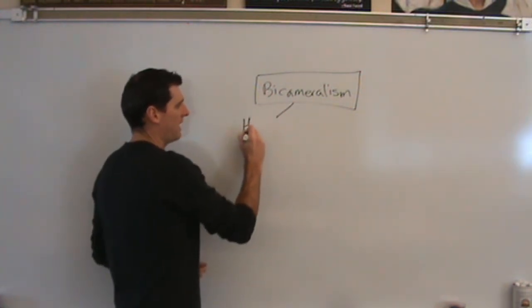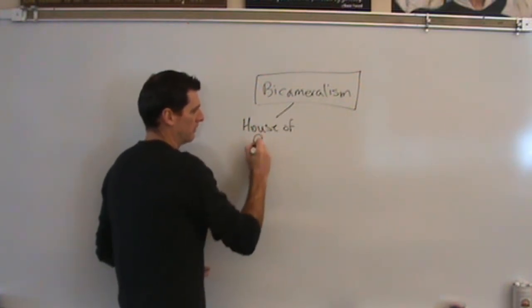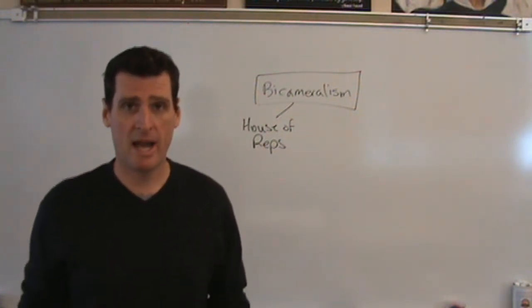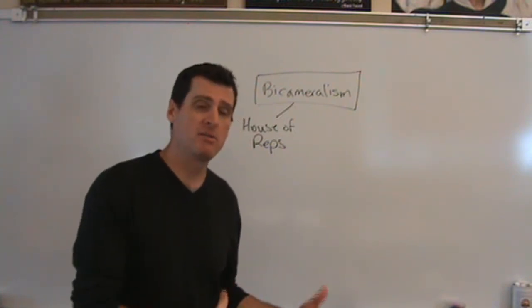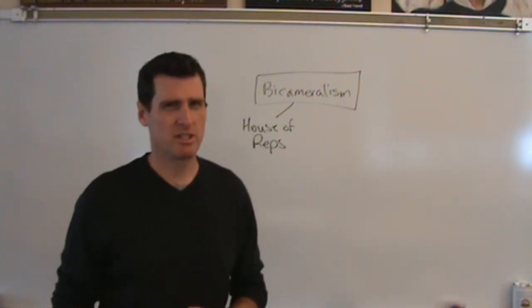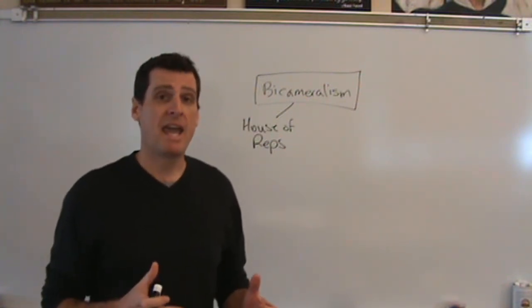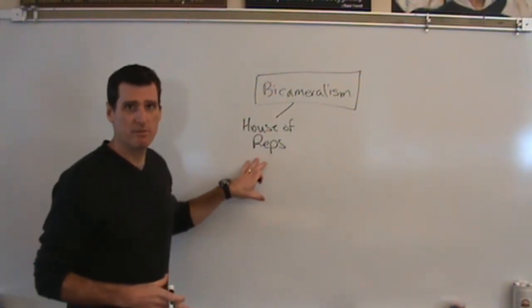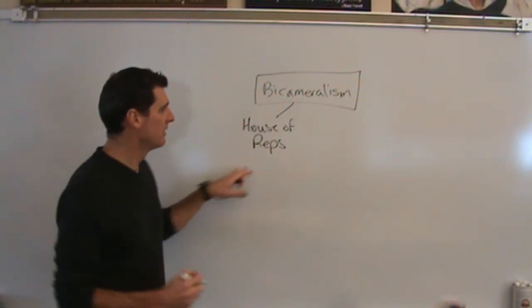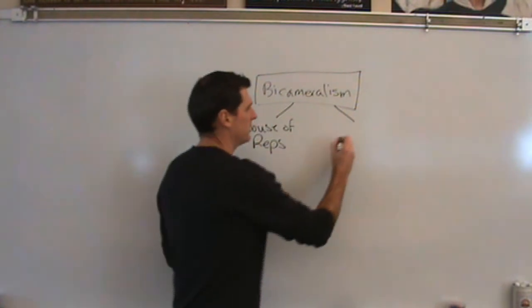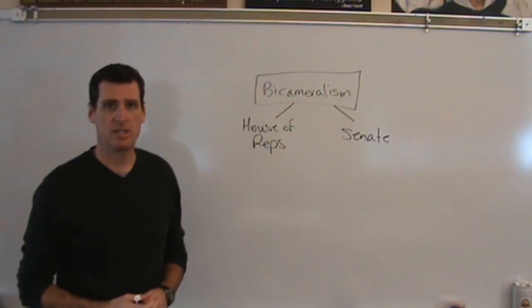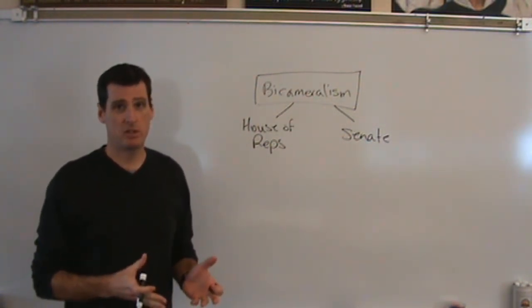Under a bicameral system, the power of Congress is divided into two distinct houses. On one side you have the House of Representatives, considered the lower house — there are a lot more representatives, each covering a smaller territory, and population is the basis for determining the number of representatives per state. The other side is the Senate, comprised of two people from each state, giving an equal say regardless of state size.